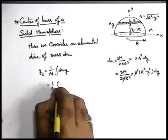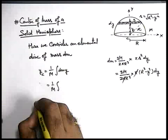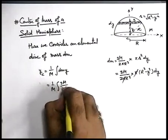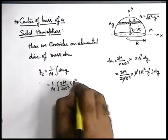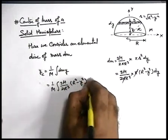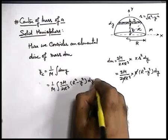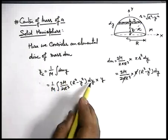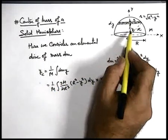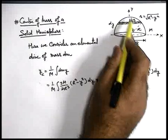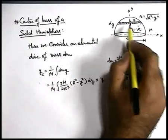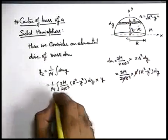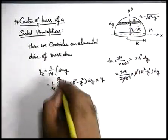So here it is one by M integration of, if we substitute the value of dM, we can see it is three M upon two R cubed into R squared minus Y squared dY multiplied by Y. Now as we are integrating in terms of Y, we substitute the limits of Y from zero to R because for this solid hemisphere we need to integrate all such discs one over another from bottom to the top of this hemisphere, so limits will be from zero to R.